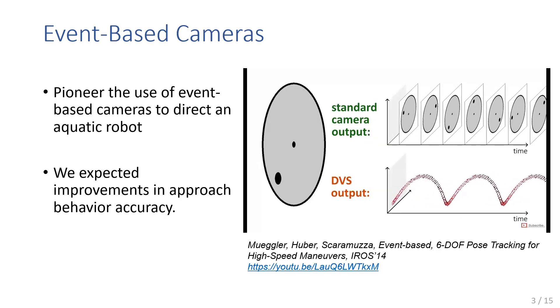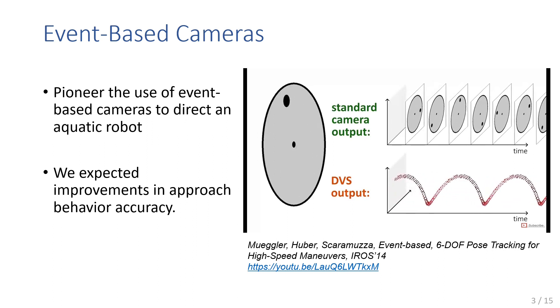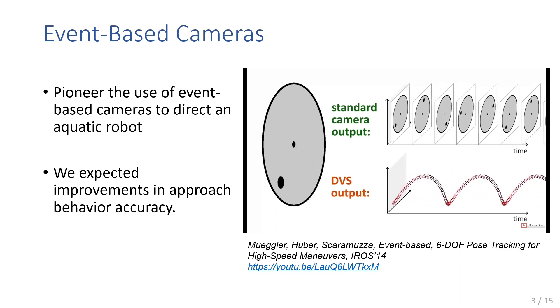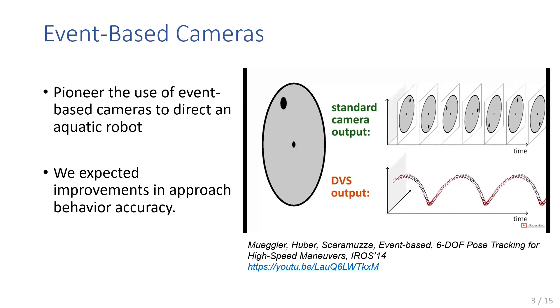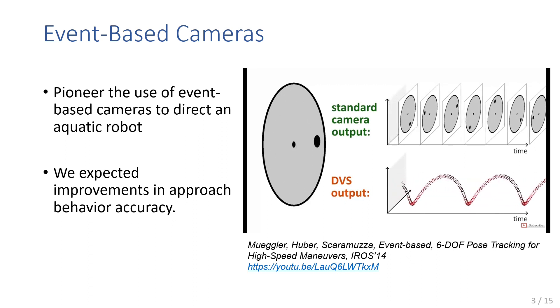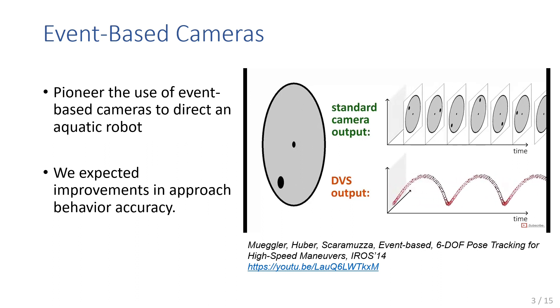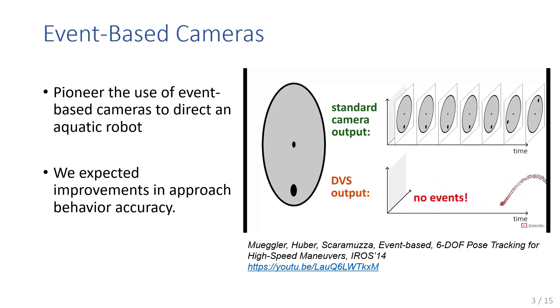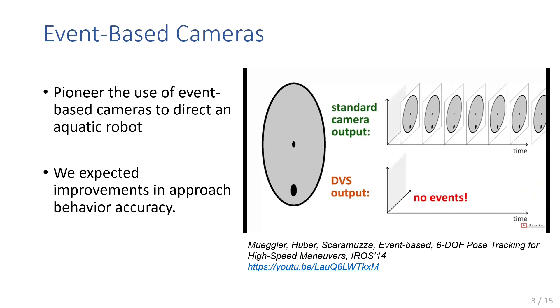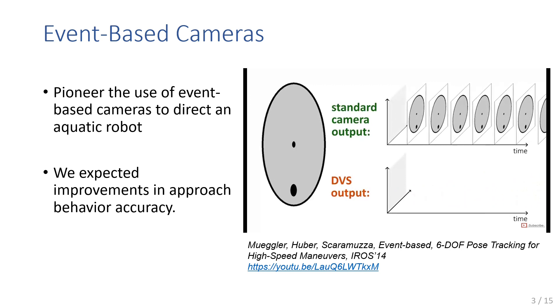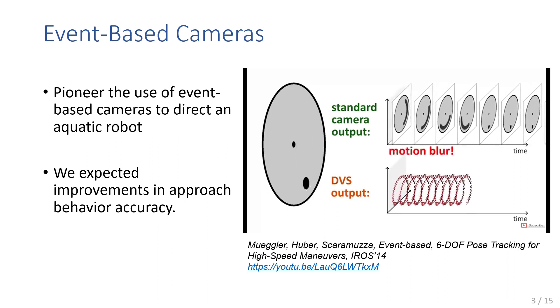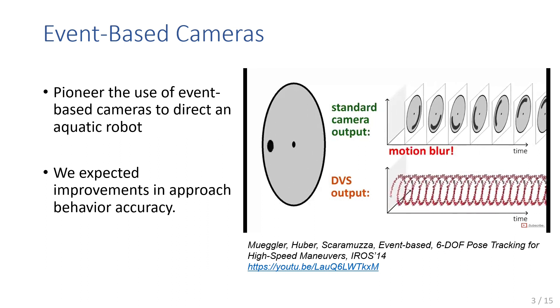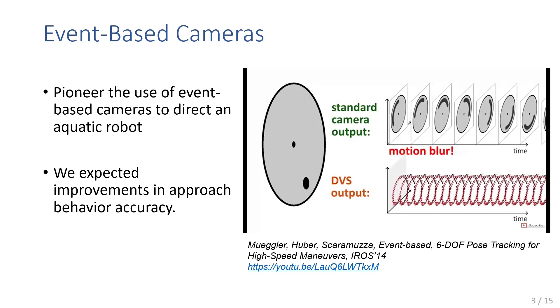An event-based camera works according to a principle analogous to how retinal photoreceptors function in the eye. In contrast to frame-based cameras where complete images are captured at a certain sampling frequency, event-based sensors provide an array of pixels sensitive to logarithmic changes in light intensity. The information generated consists of a stream of asynchronous events, which means a considerable amount of redundant information doesn't have to be sent. Each event indicates the location of the pixel experiencing a light intensity change greater than some threshold and the polarity of that change. We expected that by interfacing the neural network with this biologically inspired strategy for sensation, we would observe improvements in the robot's approach behavior accuracy.